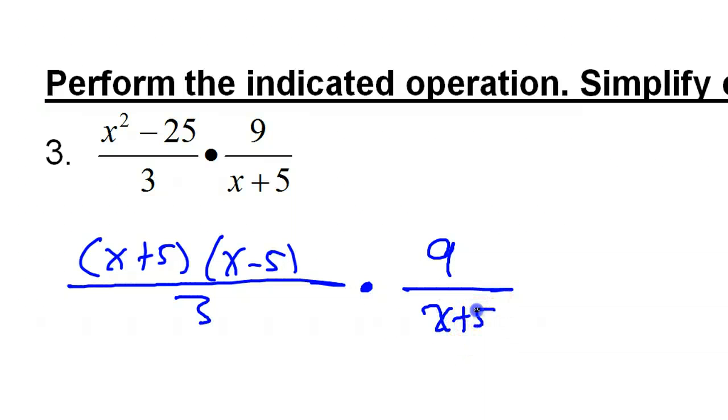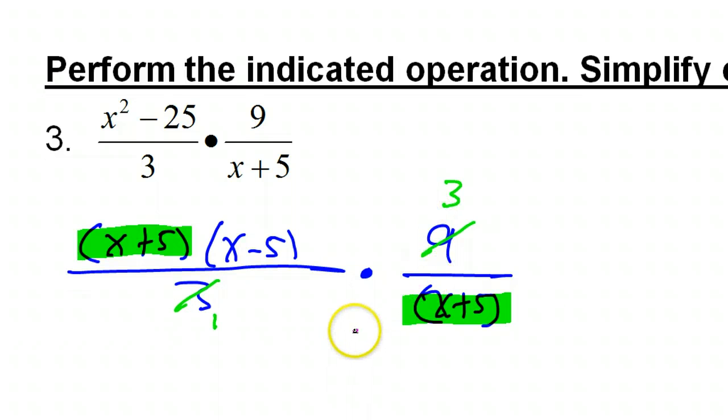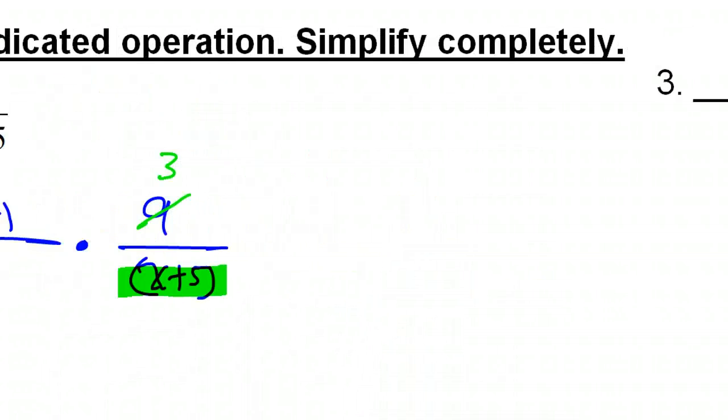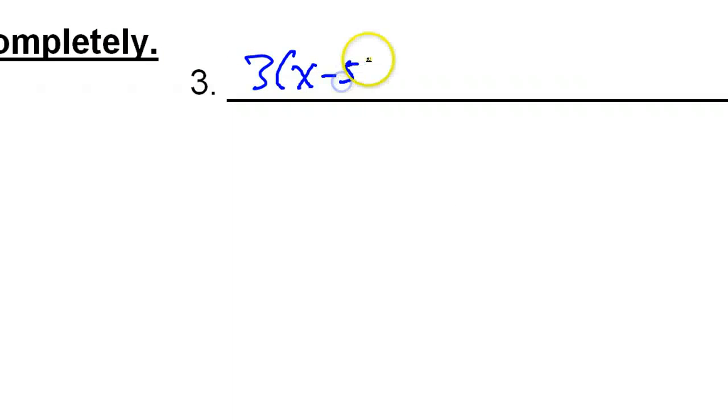So, that's 9 over x plus 5. Now, anything I highlight right now is about to cancel out. The x plus 5 that's high, the x plus 5 that's low, numerator, denominator, it doesn't matter that they're in different fractions. They cancel out. While we're at it, let's divide both of these by 3. 3 goes into itself once. 3 goes into 9 three times. So, that leaves us with 3 times x minus 5, with nothing in the denominator.